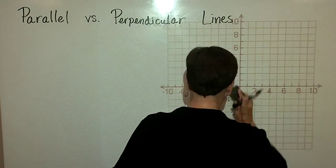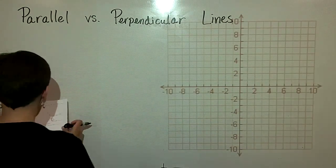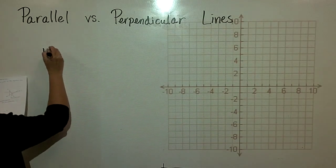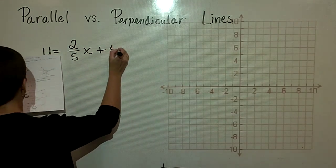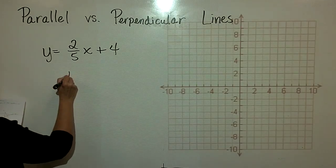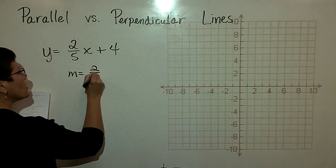Without graphing, let's check a few others. So let's go with y equals 2 fifths x plus 4. And we obviously know that its slope is 2 over 5.